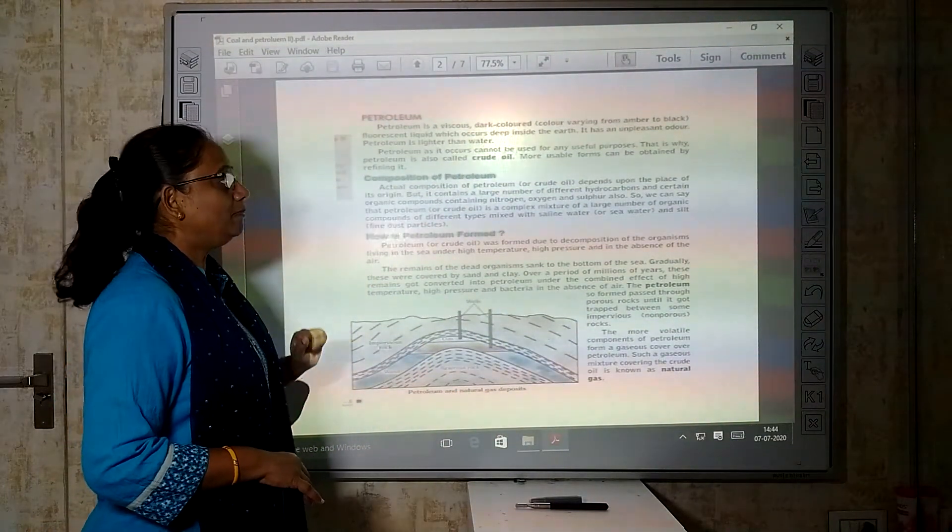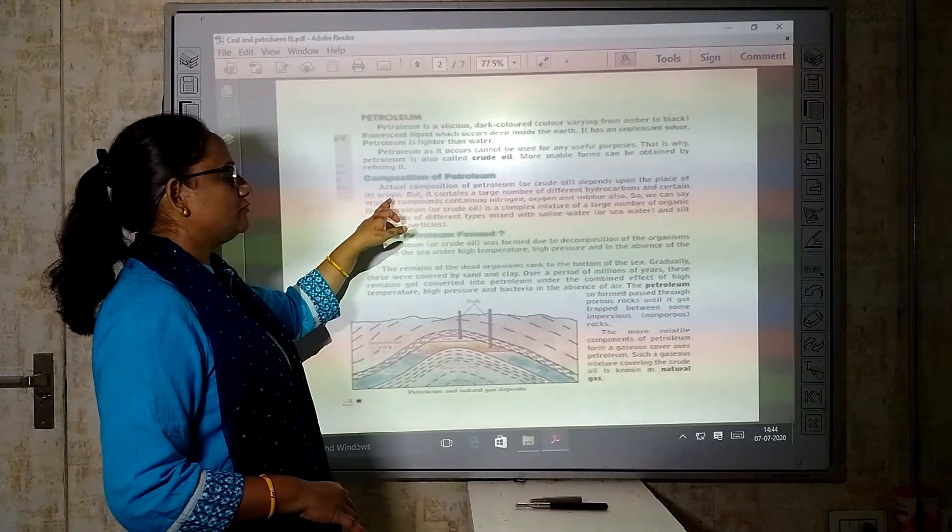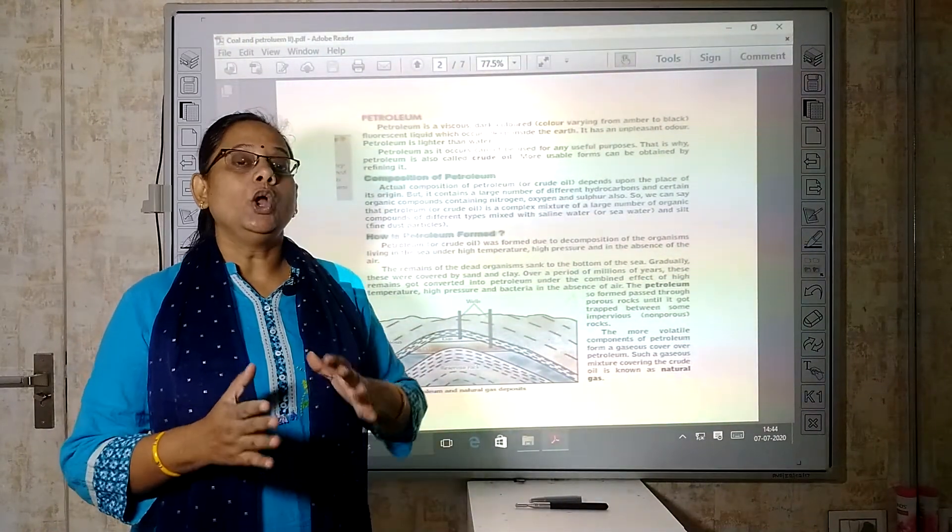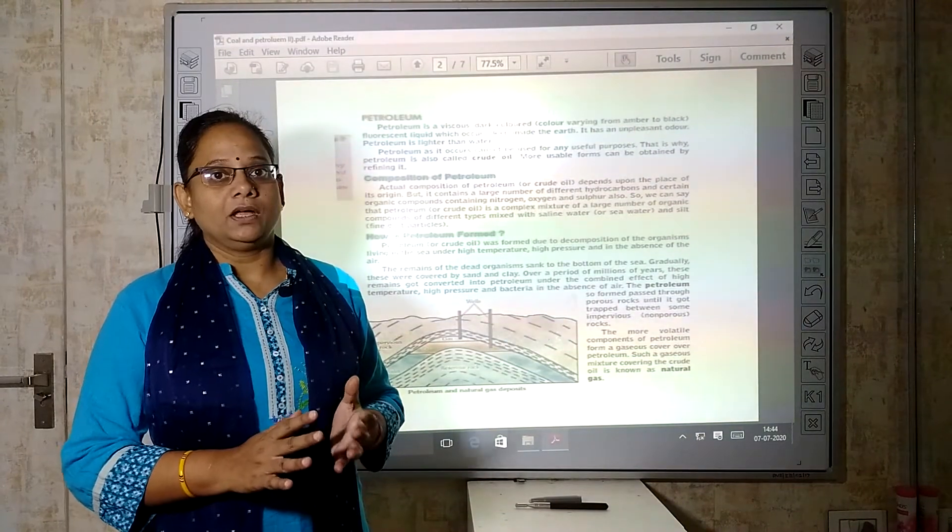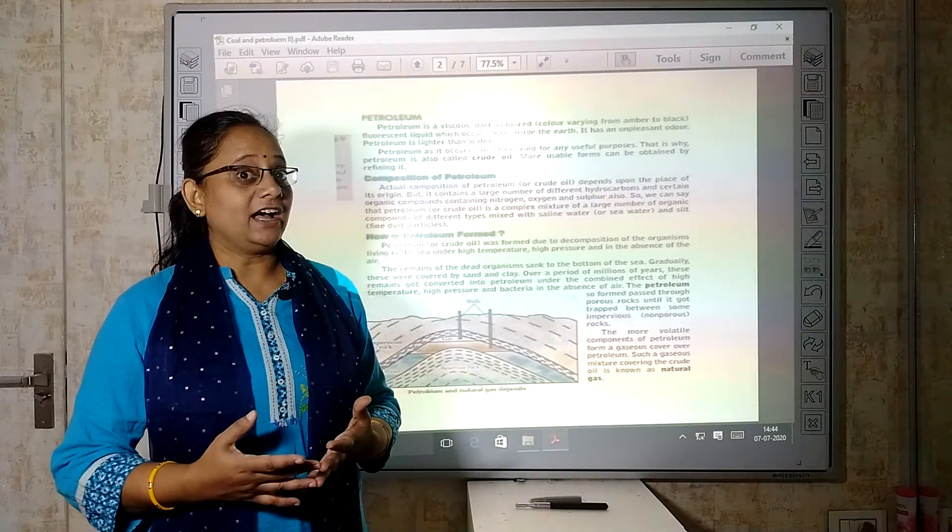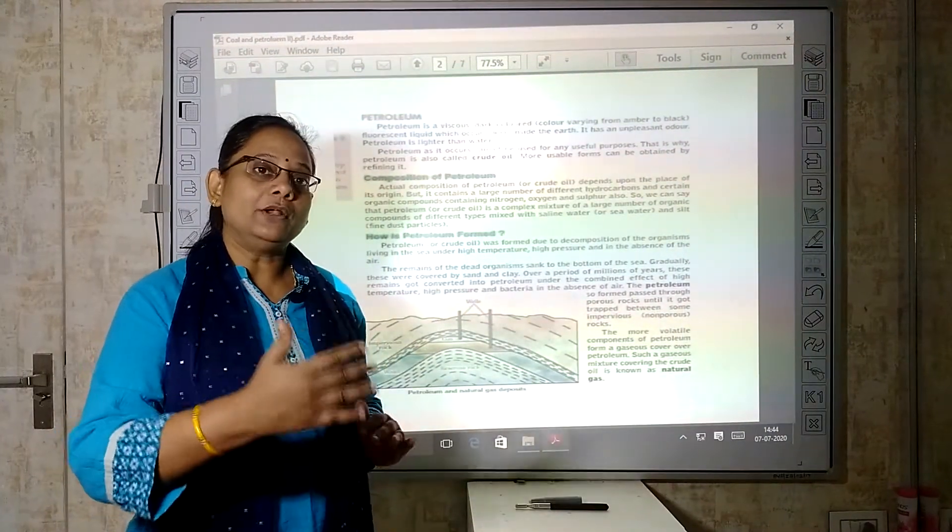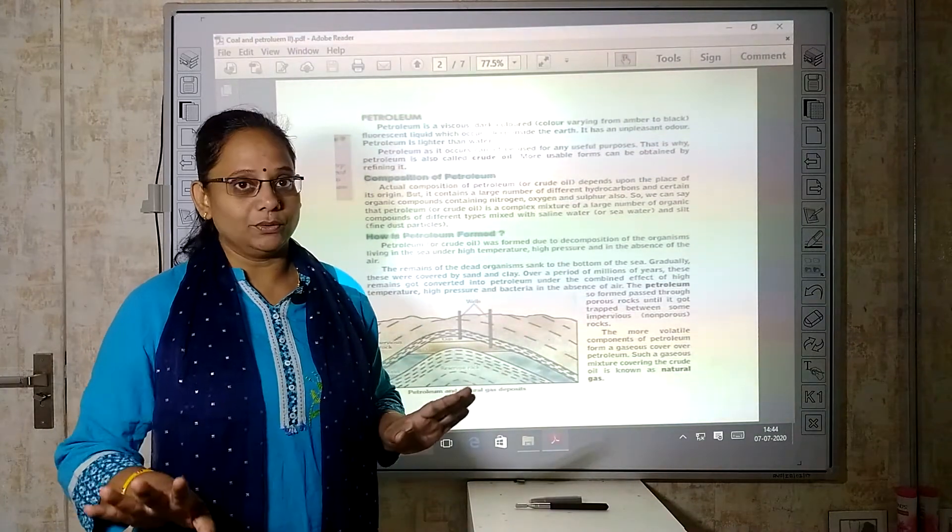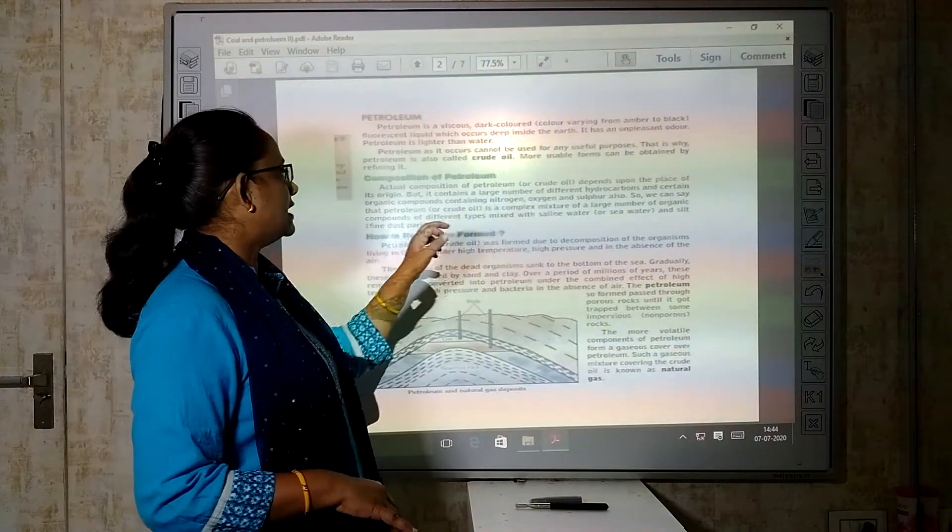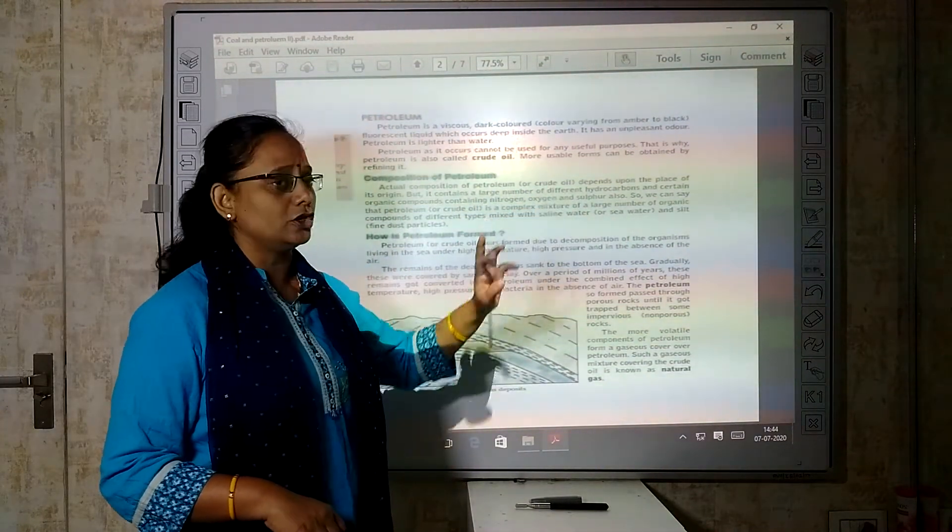Now, composition of petroleum. Composition of petroleum depends upon the place of its origin. It contains nitrogen, oxygen, sulfur also.